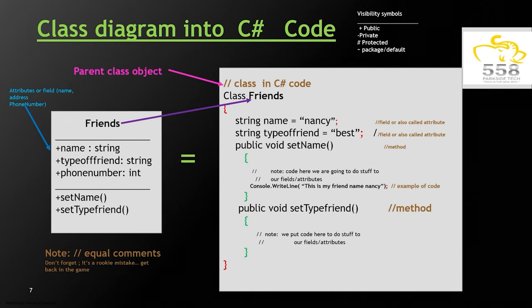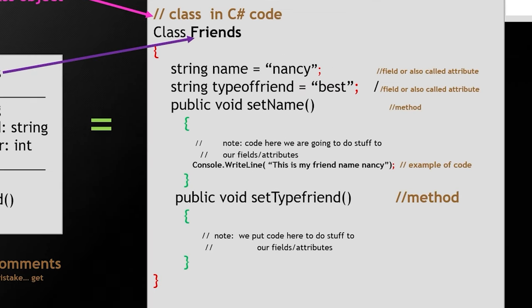Now here, what I'm showing you is how that would look if you were writing C# code. You can see that that diagram, that class diagram in UML, translates very well when you're actually writing code. Because now that friend object turns into a class object over to your right.